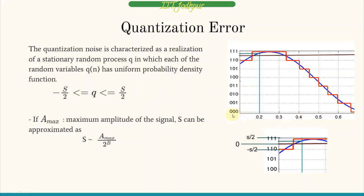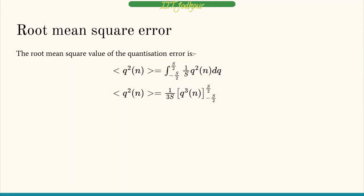Assuming the bottom level is 0 up to A_max, S equals A_max divided by 2 to the power B. The root mean square quantization error is given by (1/S) times the integral from −S/2 to S/2 of Q² dQ. Solving, the 1/S comes out, Q² integrates to Q³/3 evaluated from −S/2 to S/2, giving S²/12.